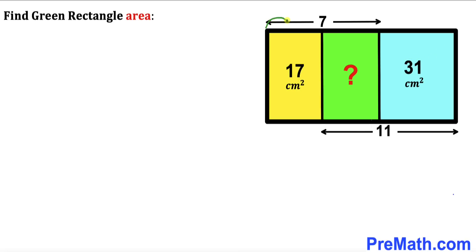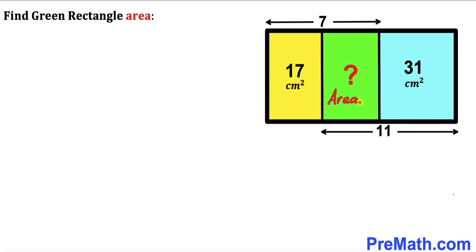Moreover, this horizontal distance for the yellow and green rectangles is 7 cm, whereas the distance for the green and blue rectangles is 11 cm. Our task is to calculate the area of the green shaded rectangle.